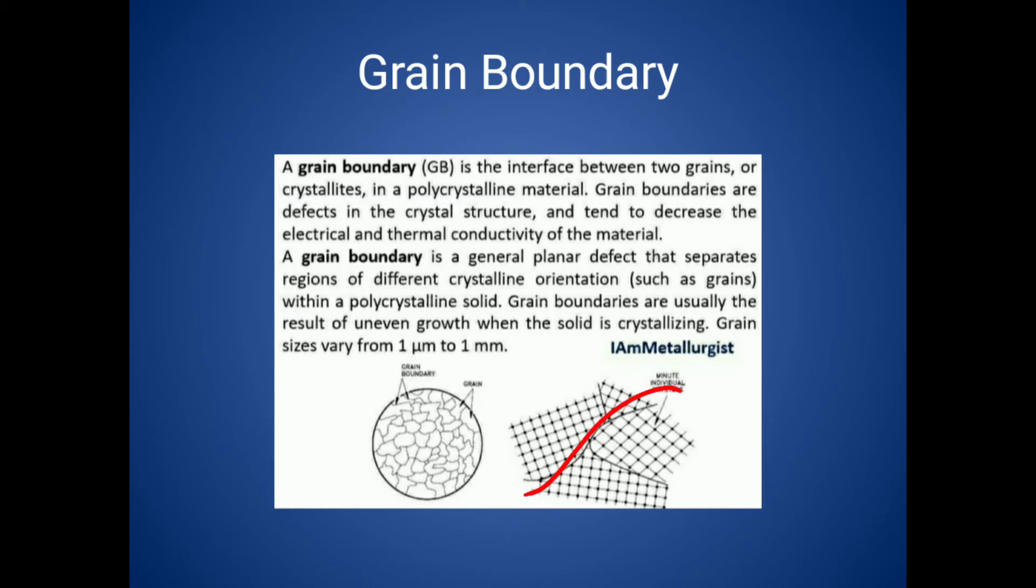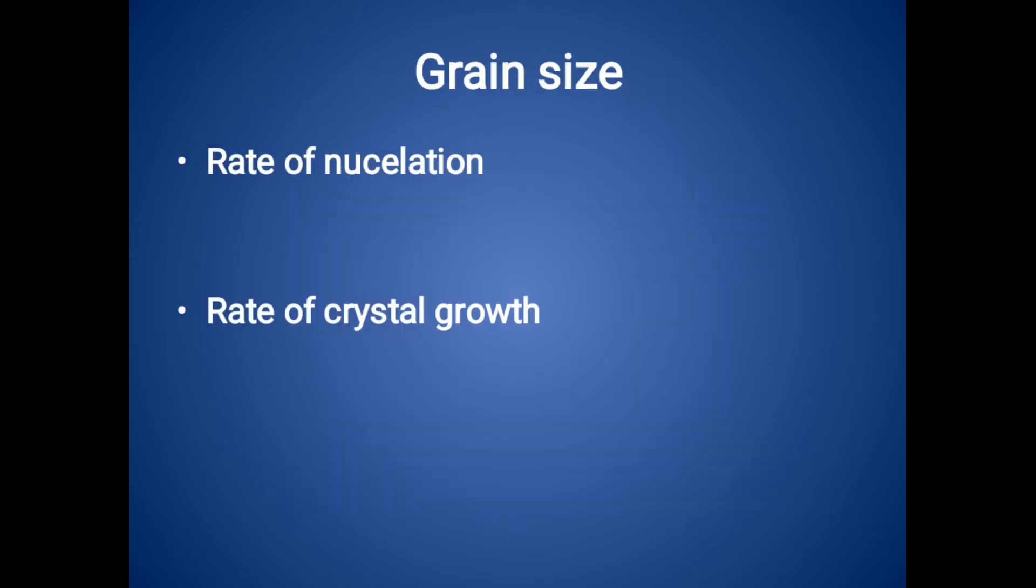In crystallization it contains two stages: nucleation and crystal growth. Similarly, to increase or decrease grain size we have two factors - one is the rate of nucleation (denoted by capital N) and rate of crystal growth (denoted by capital Z).